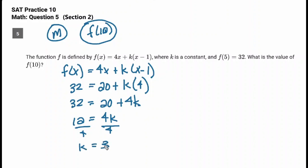Cool, so now we know what k is. We're going to run the function again for f(10). So every time we see an x, what are we going to put in? 10. So 4 times 10, that's 40, plus (now we know what k is, that's 3) times (we're going to put in a 10 minus 1, which is 9). So it's 40 plus 27.